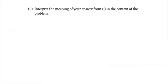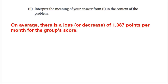The second part of Part B asks us to interpret that rate of change in context. The rate of −1.387 tells us that on average there is a decrease of 1.387 points per month for the group score. So for every month, the group score decreases on average by about 1.387 points.